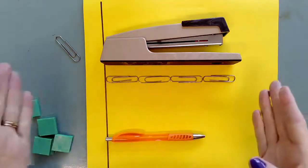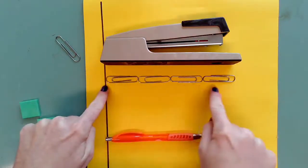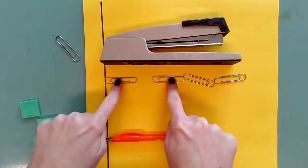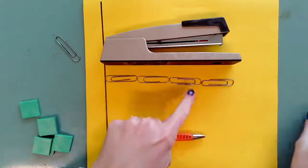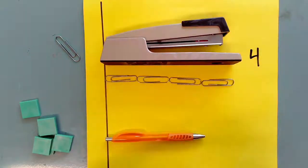All right, so I'm looking here. My object is right here on my black line, and then I have each one of my paper clips lined up to this black line. You can see there are no gaps or overlaps. So this stapler is four paper clips long.